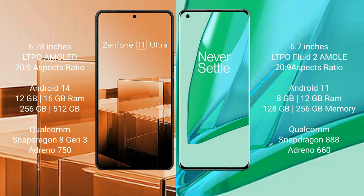The Asus Zenfone 11 Ultra runs on the Android 14 operating system, while the OnePlus 9 Pro runs on the Android 11 operating system.